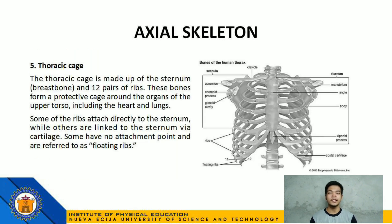Number 5: Thoracic cage, made up of the sternum or breastbone and 12 pairs of ribs. These bones form a protective cage around the organs of the upper torso, including the heart and lungs. Some ribs are attached directly to the sternum, while others are linked to the sternum via cartilage. Some have no attachment point and are referred to as floating ribs.